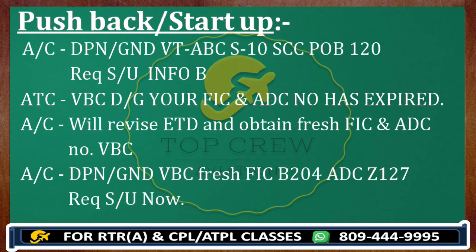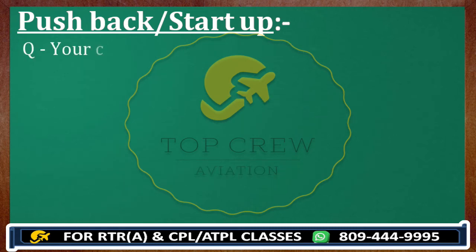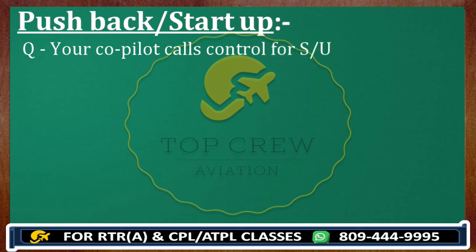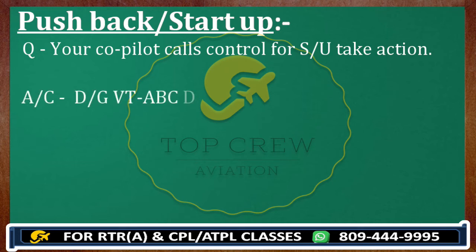One question you will get in examination: your co-pilot calls control for startup — take correcting action. You need not call control; that is the incorrect ATC. So how you are going to make the call: Delhi Control, Victor Tango Alpha Bravo Charlie, disregard — will contact Delhi Ground for startup.